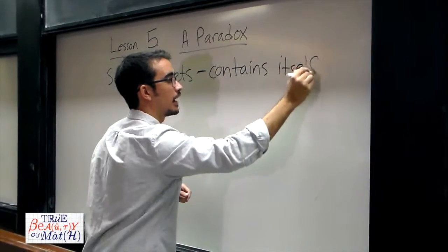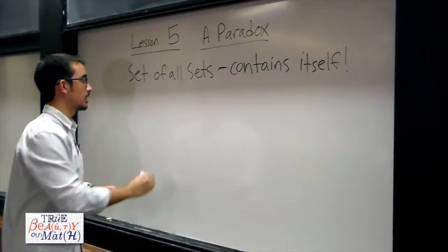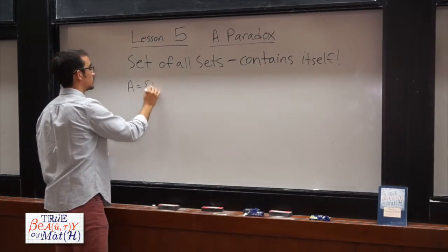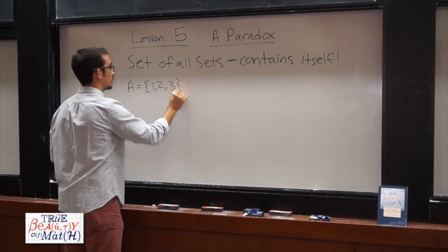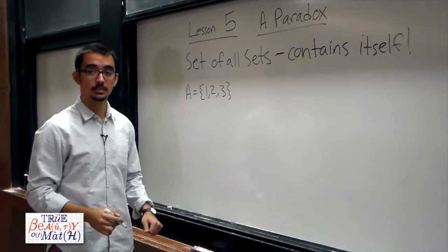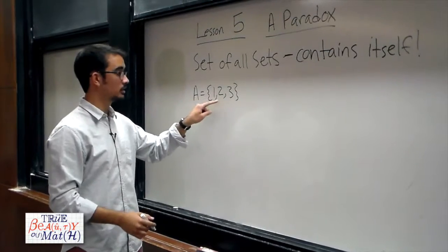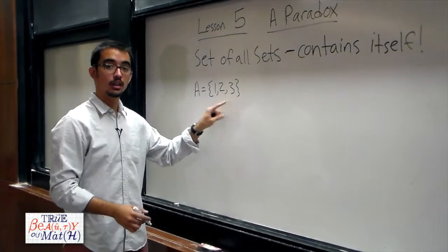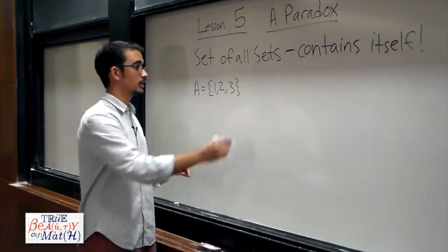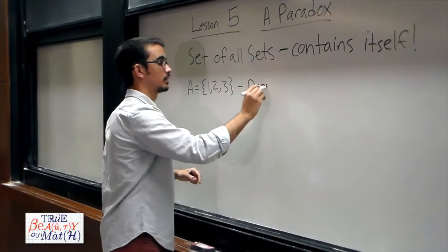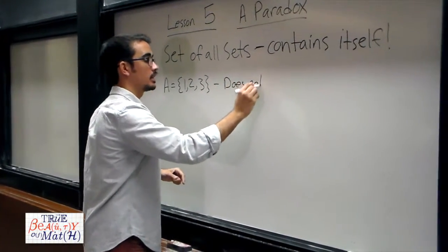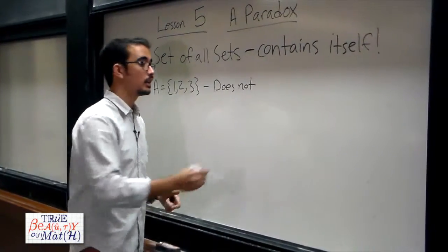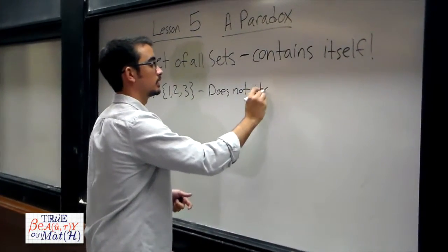Now this is very different from any other sets that we've seen. For example, the set A = {1, 2, 3} doesn't contain itself as an element. The elements of A are 1, 2, and 3, and none of those elements are the set A itself. So this does not contain itself. Indeed, every single set that we've seen so far does not contain itself as an element.